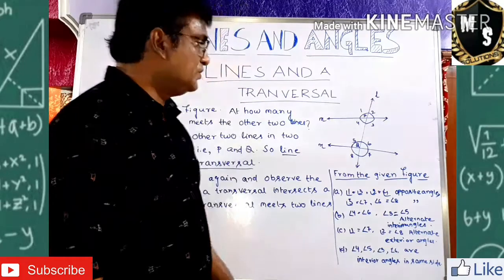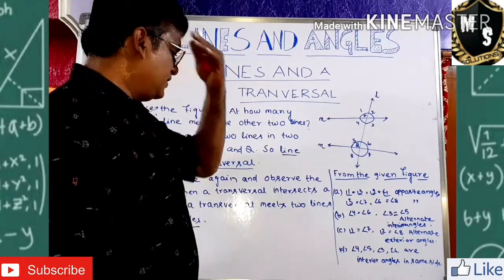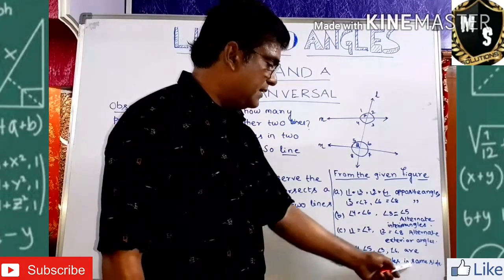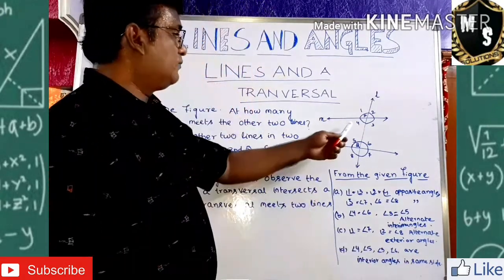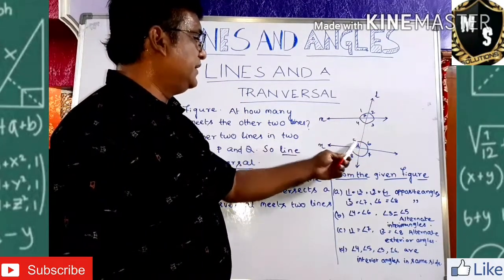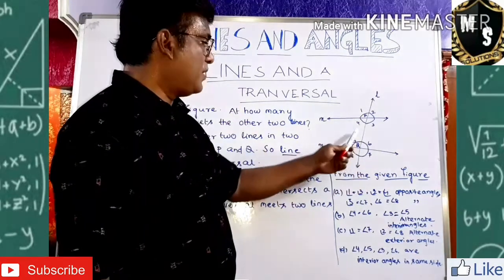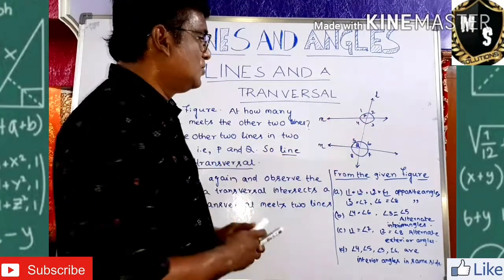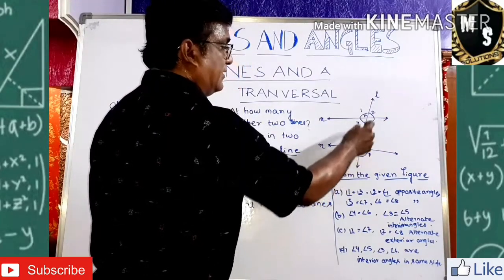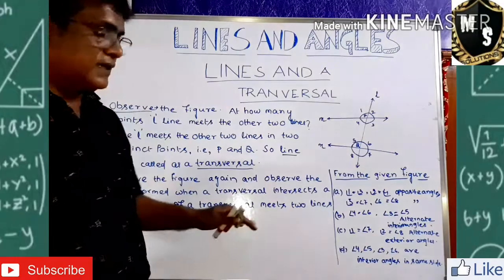Another important observation: angles 3, 4, 5, and 6 are the interior angles. Angles 3 and 6 are on the same side, and angles 4 and 5 are on the same side. These are called interior angles on the same side of the transversal — also known as co-interior or allied interior angles.